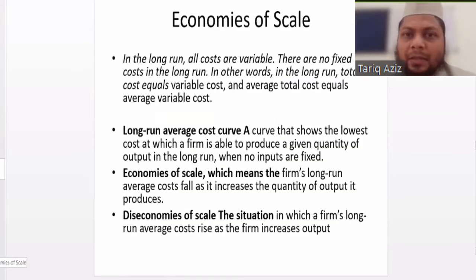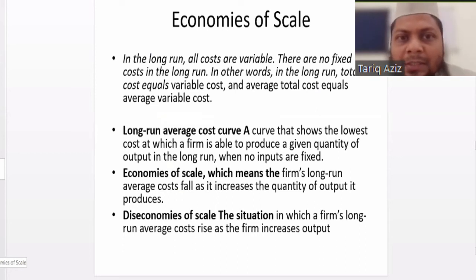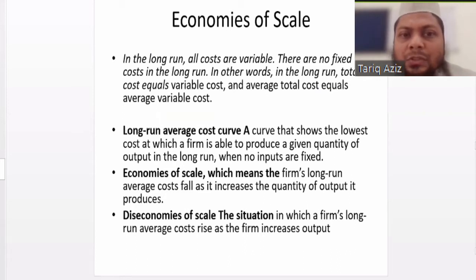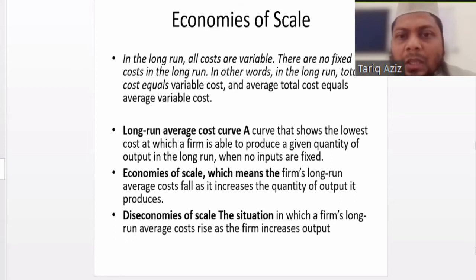The main factor that determines whether an organization is experiencing increasing, decreasing, or constant returns to scale is because of economies of scale. In the long run, all costs are variable — there are no fixed costs in the long run because every input can be changed. In other words, total cost equals variable cost, and average total cost equals average variable cost.